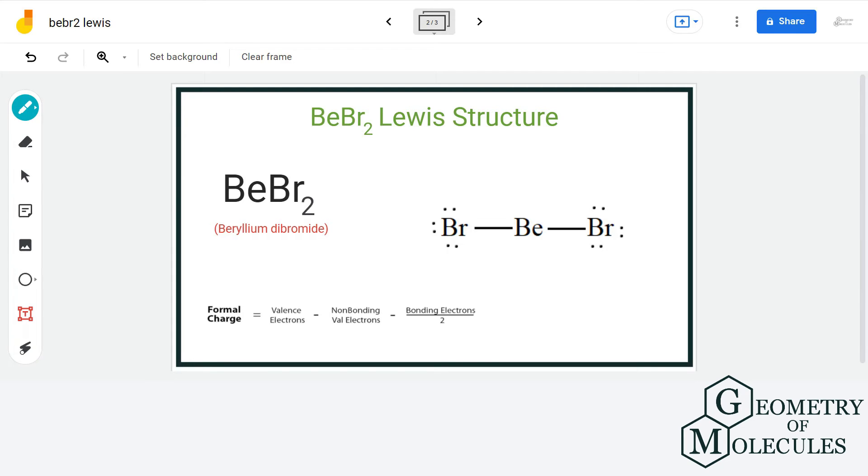Let us calculate formal charge of each atom just to confirm that this is the best possible Lewis structure. For beryllium, we have two valence electrons minus zero non-bonding electrons minus four bonding electrons divided by two that gives us a formal charge of zero.